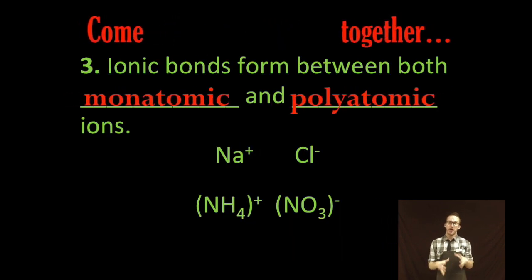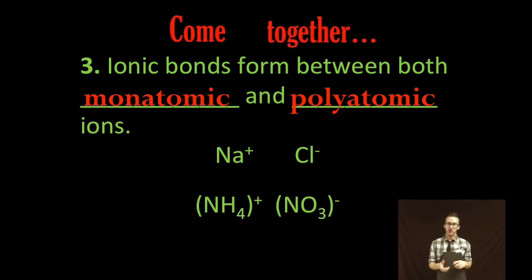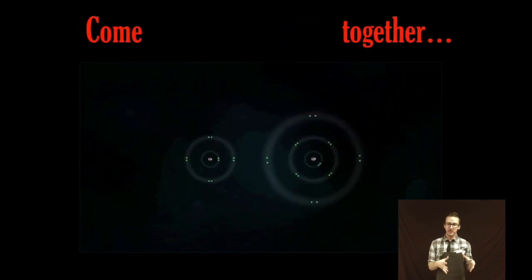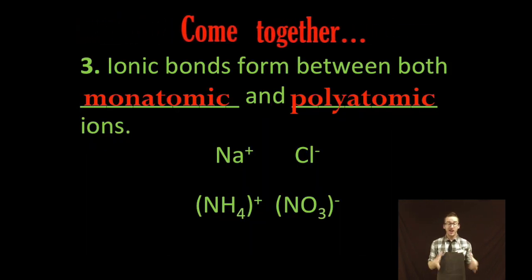It's also important to recognize that ionic bonds can form between both monatomic and polyatomic ions. So not only when individual elements gain or lose electrons, like what we're observing here in this animation between sodium and chlorine, but ionic bonds can also form between those polyatomic ions, for example between ammonium and nitrate. And hopefully at this point you're a little bit familiar with some of those polyatomic ions.